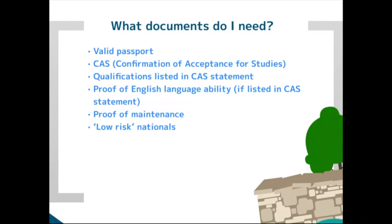Everybody will need a valid passport and a CAS, which gives you 30 of your points. The CAS is an electronic document containing all the details of your programme — what you're studying, the level, how much your course costs, and all your qualifications. It's really important that you check the information on your CAS carefully before applying. If you see anything incorrect, have it corrected with SOAS before submitting your visa application, so you're providing the correct information first time.